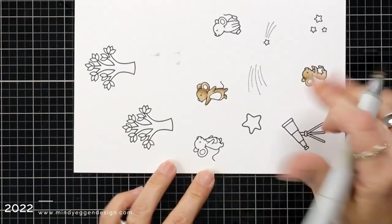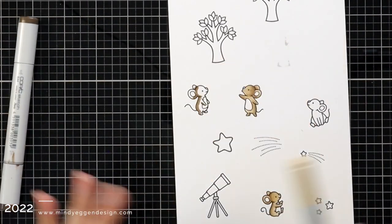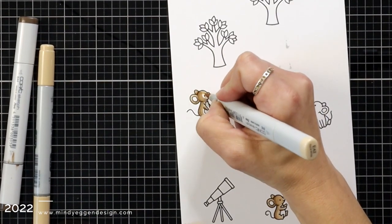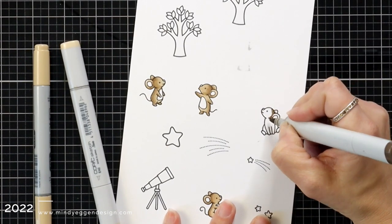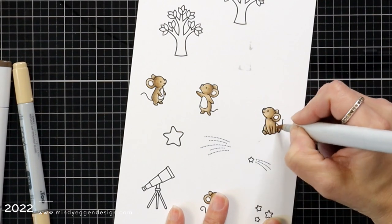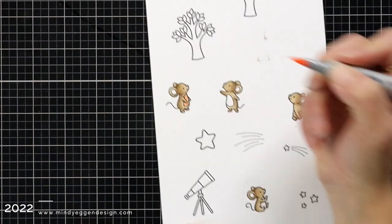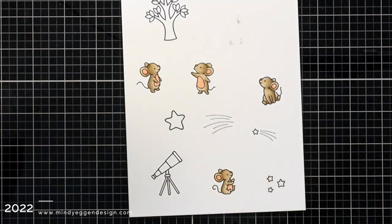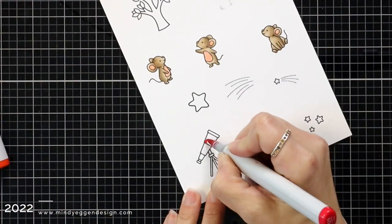I did speed up the coloring because that is not really my focus of the video today. I'm doing the mice in some brown tones. I think I used E44, 43, and 42, and then E93 for the belly and the ears, just keeping it really simple and not a ton of shading.